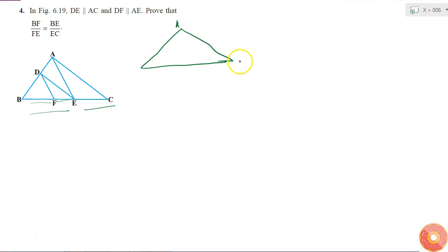So if I consider the triangle ABC, what am I given? DE, right. DE is parallel to AC.